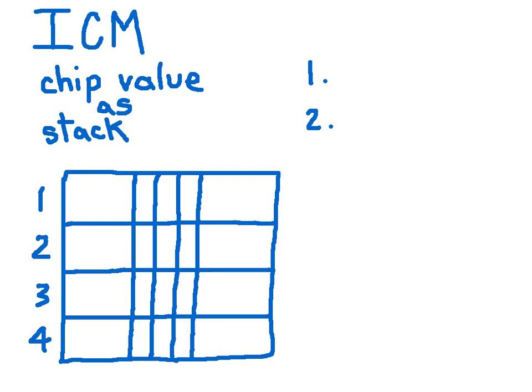Let's talk about ICM, or the Independent Chip Model. At its most basic level, it means that chip values decrease as your stack size increases.